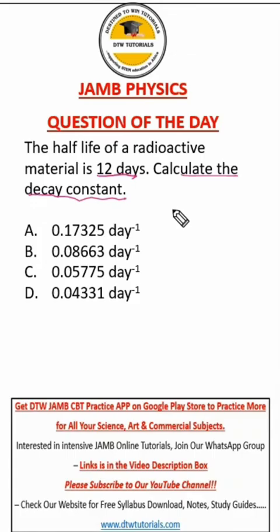I hope you remember the formula for decay constant. Decay constant is equal to 0.693 over what? Over the half-life. That is what we see. So please don't forget this formula.